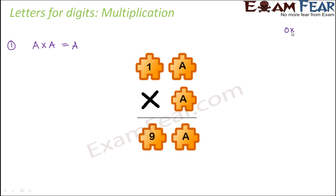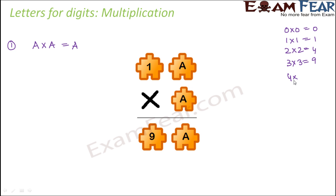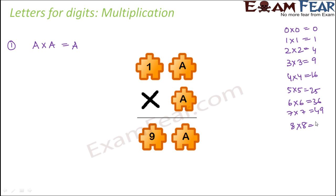Let us try it out: 0×0=0, 1×1=1, 2×2=4, 3×3=9, 4×4=16, 5×5=25, 6×6=36, 7×7=49, 8×8=64, 9×9=81. In how many of these cases does the units place of the result also have the same digit?